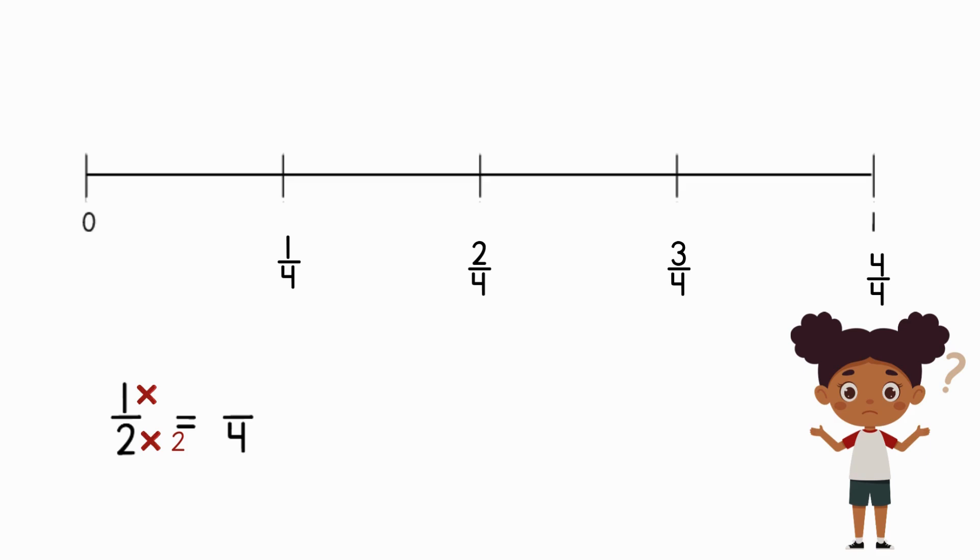The next part of this awesome trick is to do the same thing to the numerator that you did to the denominator. We multiplied the denominator by two, so now we multiply the numerator by two. One times two equals two. And now our fractions are equivalent, or equal.